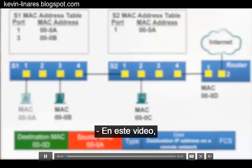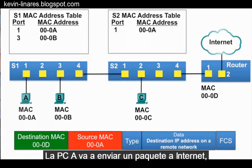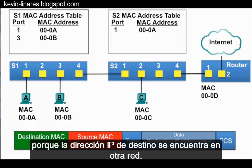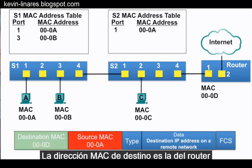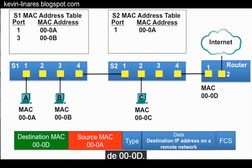In this video, PCA is going to send a packet to the Internet because the destination IP address is on another network. So in this case, the source MAC address is that of PCA, and the destination MAC address is that of the router at 000d.